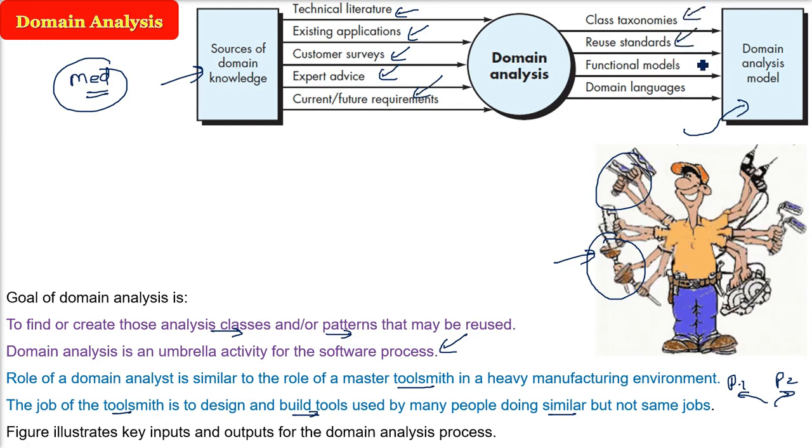Finally, you will get the result as class taxonomies, reuse standards, functional models, and domain languages. These will be the outputs. Finally, we will get the domain analysis model.